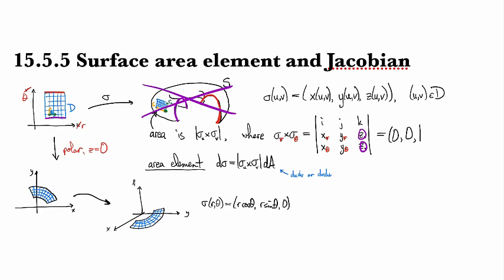So this guy here, X_R, Y_R, X_theta, Y_theta. This one here is the Jacobian.